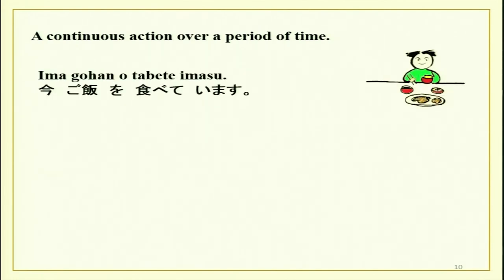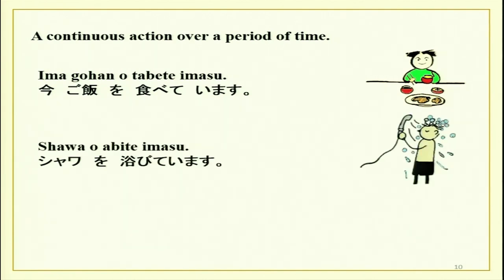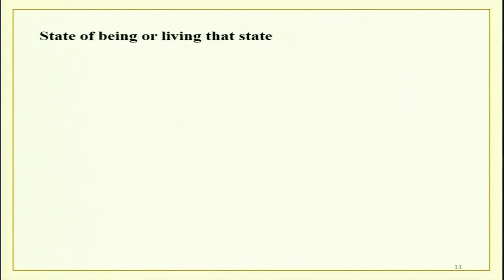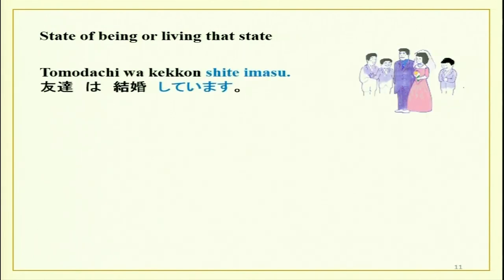This you did last time: ima gohan wo tabete imasu — I am eating food, which is not going to last for two hours or three hours. Then, shawa wo abite imasu — it's a short period. And then, Mariko-san wa okasan ni denwa wo shite imasu — she is talking to her mother. Then, what else does it show? State of being, or living that state — basically meaning being in a certain state. There are certain verbs you can use here; not all verbs will work. Tomodachi wa kekkon shite imasu — that they are married, and not that the ceremony is continuing.